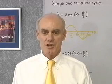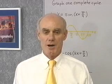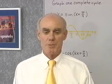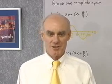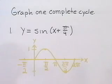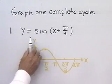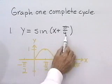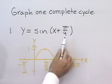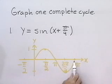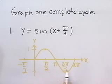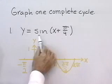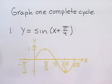We want to add phase shift to the properties of the graphs of our trigonometric functions. Let's look at our first example. We want to graph y equals the sine of x plus pi over 4. I've written down here the graph of y equals sine x so we can compare it with the graph of y equals sine of x plus pi over 4.